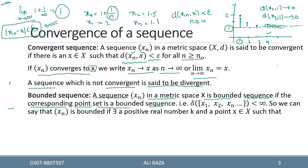For example, consider the sequence 1 + 1/n. The first term is 1+1 = 2, the second term is 1.5, the third term is 1.33, the fourth term is 1.25, and as n increases further, the terms approach 1.2 and continue decreasing as n values grow.